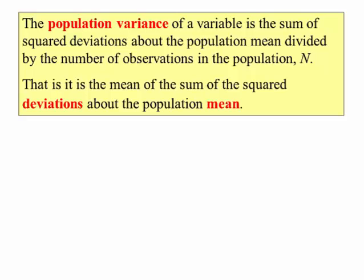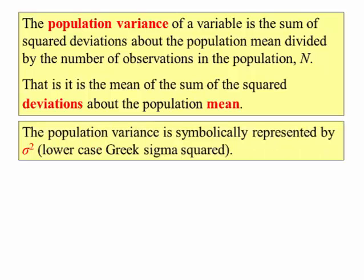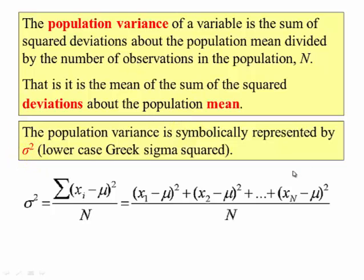The question may be, why do you square them? Well, we'll get to that. The population variance is represented by lowercase sigma squared. Here is the formula. This means sum. So you take each value, subtract the mean, square it, add them all up, and then divide by how many you have. So it is the square deviations about the mean.